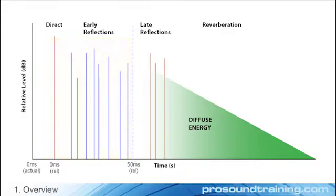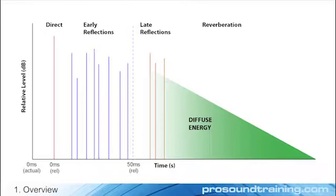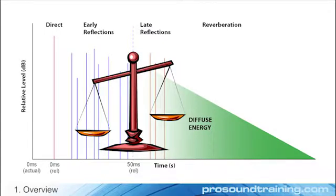The remaining energy, late reflections and reverberation, are considered detrimental to communication. The objective of the sound system design process is simple: make decisions that produce dominant early energy at all listener positions.